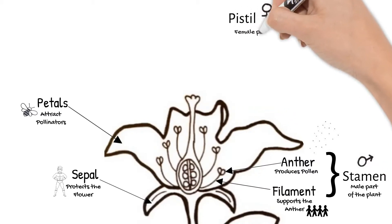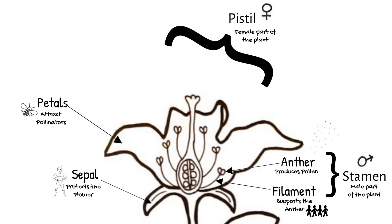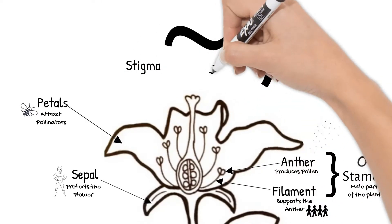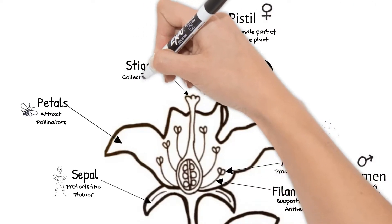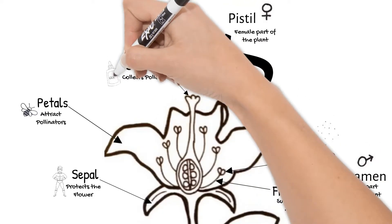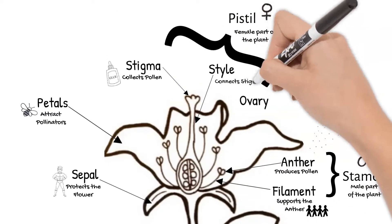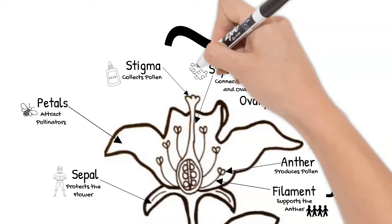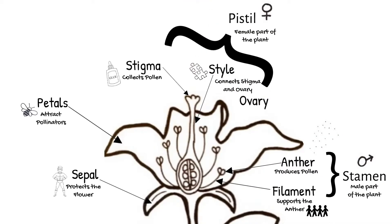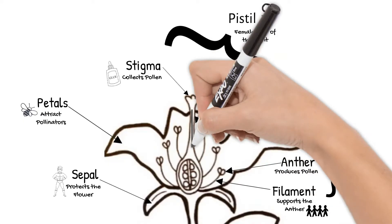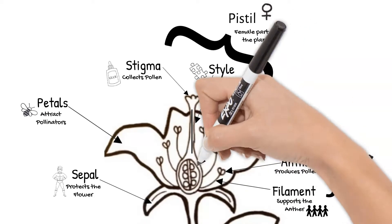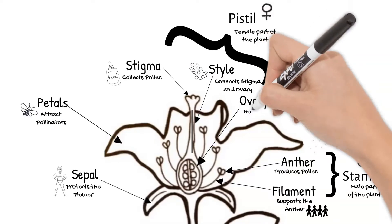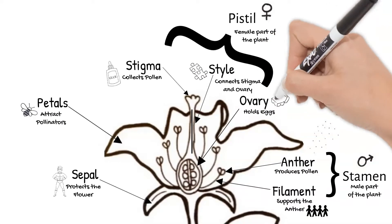The pistil is the female part of the flower and has three main structures: the stigma, style, and ovary. The stigma is this tip — it is sticky to catch pollen grains. The style is a tube that connects the stigma and ovary. When pollen is stuck to the stigma, a pollen tube then grows down the style.